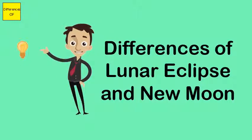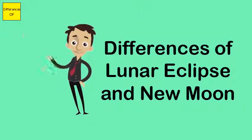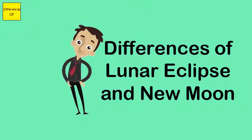Lunar eclipse occurs when the Earth comes between the Sun and the Moon in such a way that it blocks the Sun's rays completely from reaching the Moon.